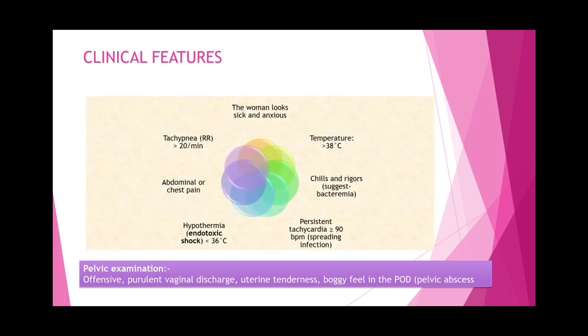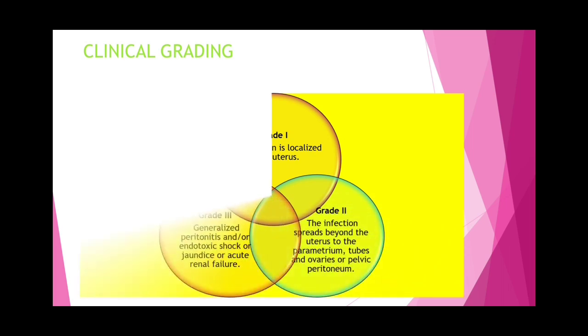Clinical features of septic abortion: the woman looks sick and anxious, temperature more than 38°C, tachycardia, increased respiratory rate more than 24 per minute, chills and rigors suggesting bacteremia, lower abdominal pain, chest pain, and hypothermia. During pelvic examination: offensive prolonged vaginal discharge, uterus feels tender, and possibility of pelvic abscess.